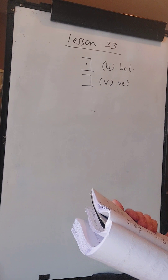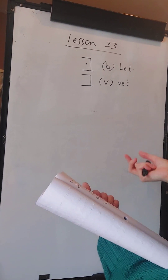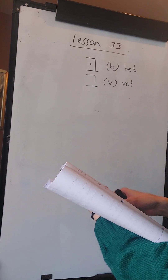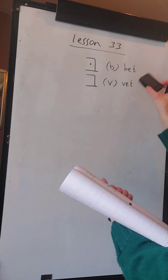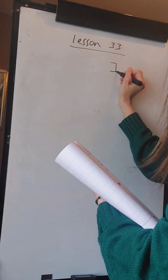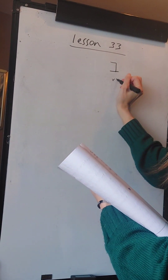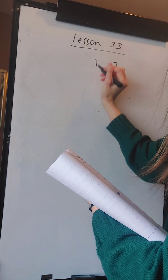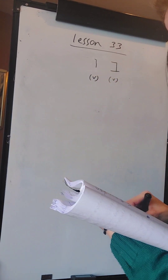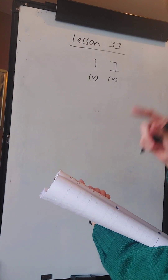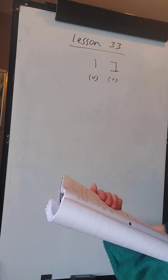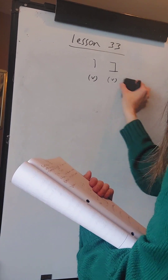So Vet is the letter Bet without the dot. There are two symbols for the V sound - we can use the new one, the Vet, to get the V sound, or we can also use the Vav to get the V sound. A long time ago the Vav sounded like the W in English, but today both symbols sound the same. Now we'll have a look at some vowels with the Vet.